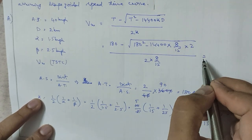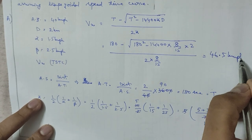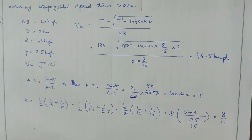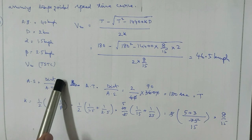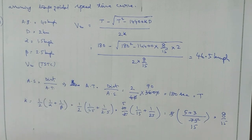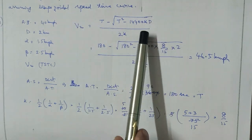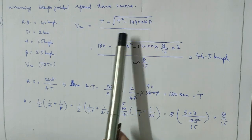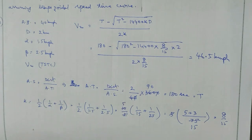The maximum speed Vm = 46.5 kmph. This is a direct application of the trapezoidal speed-time curve formula. The only intermediate steps required are calculating the actual time T and the constant K — distance D is already given.